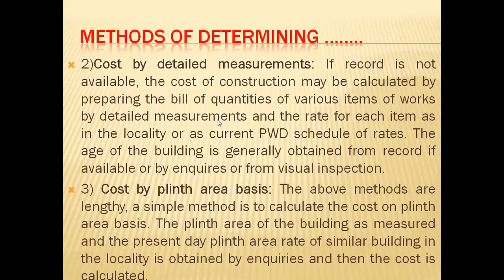This detailed measurement method is valid when we have the full data known. The last method is the cost by plinth area method. We will take out the plinth area and multiply by the cost of construction per unit area. For example, if your plot is 2,000 square feet and the construction area is 1,000 square feet, then 1,000 square feet into 1,000 rupees per square foot gives us the cost.